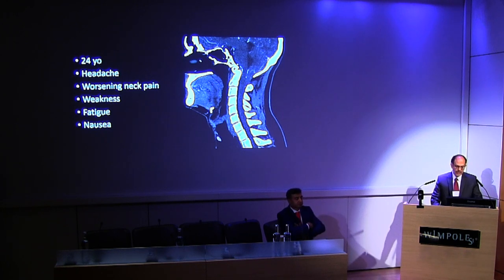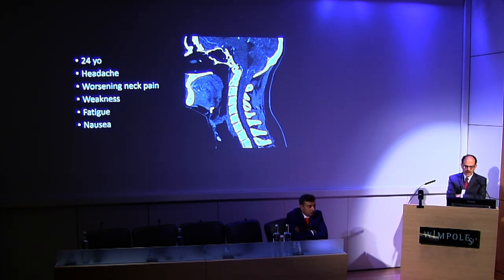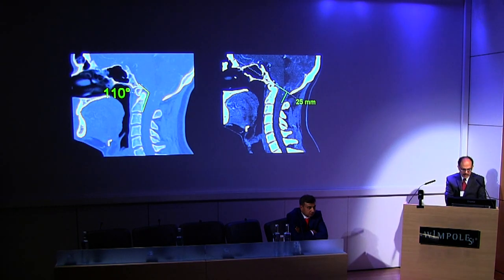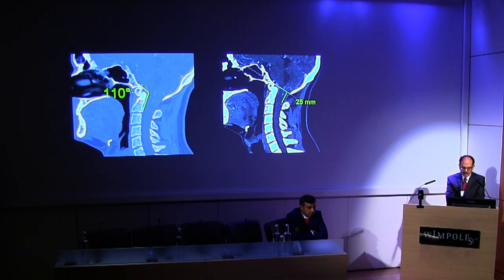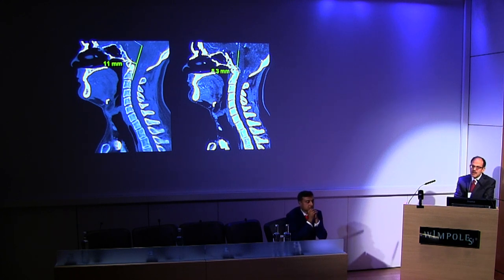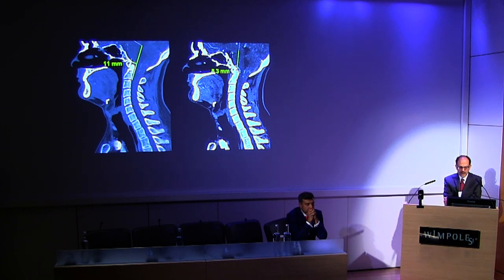This is a very interesting young man who had an acute onset of headache, worsening neck pain, body weakness, fatigue, and nausea. He has 24 millimeters displacement of tonsils. The clival axial angle is very low, suggesting impingement. The horizontal Harris measurement is 11 millimeters and the Grab-Map Stone Oaks measurement is 8 millimeters. He ended up having decompression and fusion and did very well for three and a half years, going back to work as a roofer.